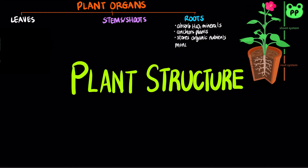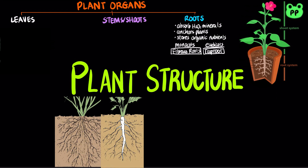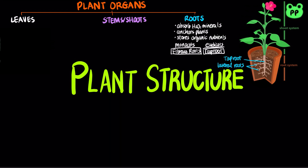Seedless vascular plants and monocots have a fibrous root system, characterized by many thin lateral roots with no main root. Whereas eudicots, including many flowering plants, have a taproot system consisting of one main vertical root that gives rise to some large lateral roots.